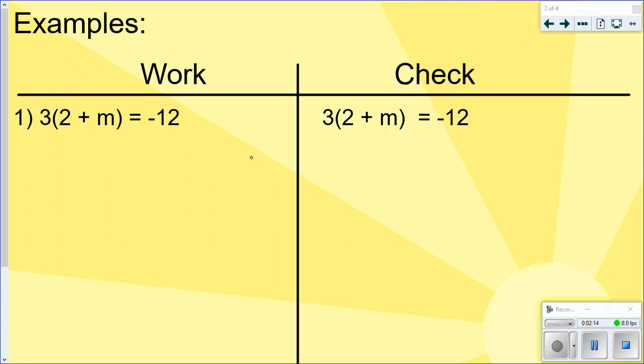So step number one is to distribute if necessary. So when we look at this, we see a number next to parentheses, and inside the parentheses, we have a 2 and an m being added together. That's distributive property. So that's what we're going to do first. The first thing I'm going to do is distribute this 3. So I'm going to multiply 3 times 2 is 6, plus 3 times m is 3m. That equals negative 12.